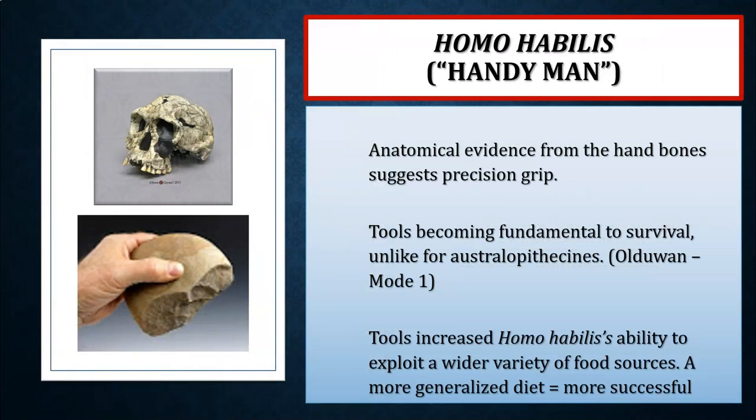We see anatomical evidence from the hand bones suggesting more of a precision grip, which would have been critical for both the use and manufacture of stone tool technologies. Tools became much more fundamental to survival, unlike for the australopithecines. Tools increased Homo habilis's ability to exploit a much wider variety of food sources — a more generalized diet is more successful because if one food resource disappears, you can quickly switch to another. This adaptability, along with stone tool use and later fire, migration out of Africa, and symbolic expression, helps explain the success of genus Homo.